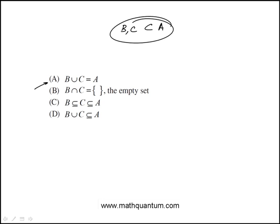So I'll just start with all the choices. B union C equals A. Well, not necessarily, because you can have elements in A that are not present in either B or C.